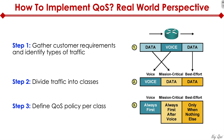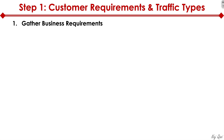Voice gets the highest priority. Mission critical gets the next level after voice. Best effort you could care less about because it's mostly TCP-based — web surfing and all that. If it gets dropped, that's okay; it can always be retransmitted. Now let me zoom into each step. Step one is customer requirements and traffic types. We gather business requirements and identify business-critical applications by auditing the business and talking to different stakeholders, asking what key business applications they run in their network. The customer might say they have email, SAP or Oracle, and various storage systems.